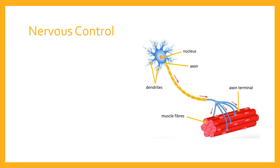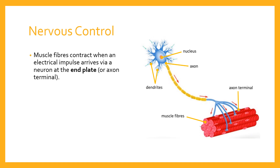What you can see on screen here is an example of a neuron. Muscle fibres contract when an electrical impulse arrives via a neuron at the end plate, sometimes called the axon terminal — that's this structure on the screen here. An electrical impulse arrives from the brain or the central nervous system, passed along neuron to neuron until it reaches a muscle fibre or a group of muscle fibres. That electrical impulse passes from the end plate and jumps across, and essentially causes the contraction of the muscle fibres that it's attached to.